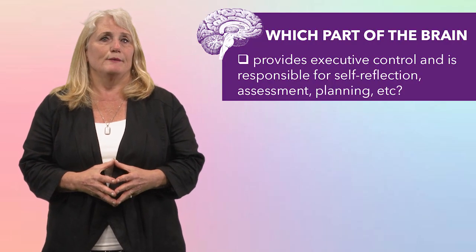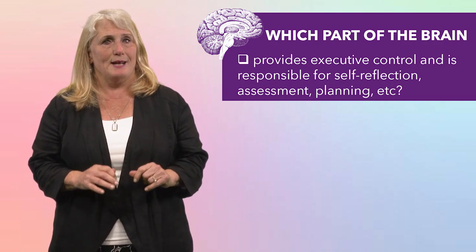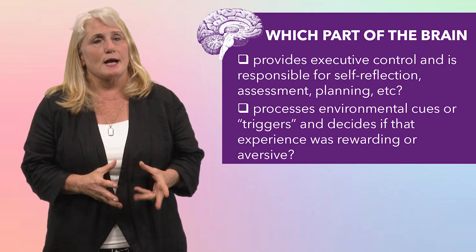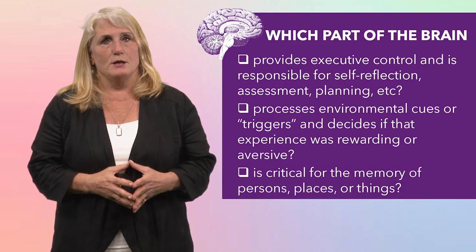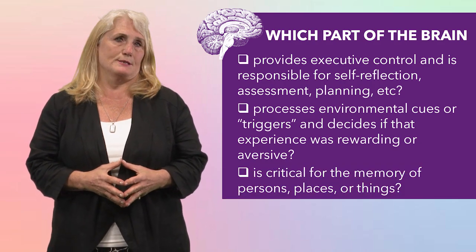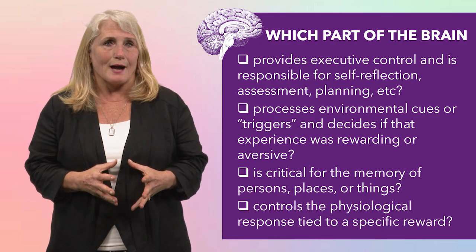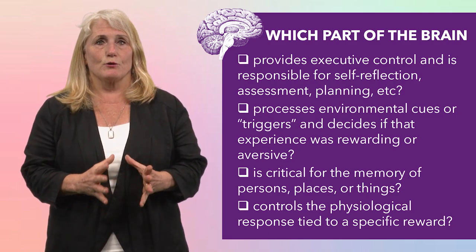Quiz: Which part of the brain provides executive control and is responsible for self-reflection, assessment, and planning? Which part processes environmental cues or triggers and decides if an experience was rewarding or aversive? Which part is critical for the memory of persons, places, and things? And which part controls the physiologic responses tied to a specific reward? Don't worry about what you got right or wrong, because we will talk about how all these parts of the brain interact with each other as addiction develops.